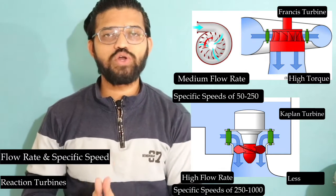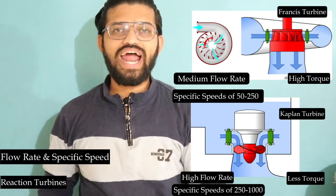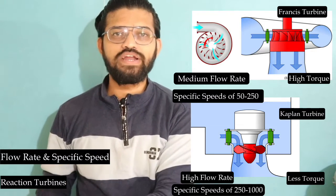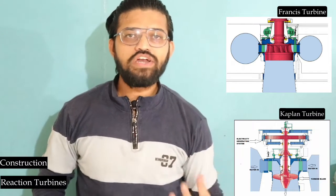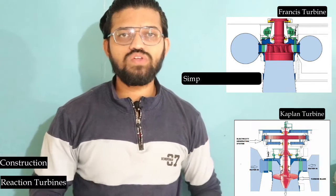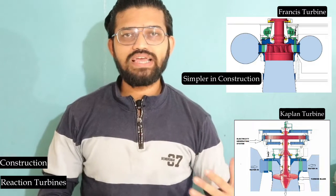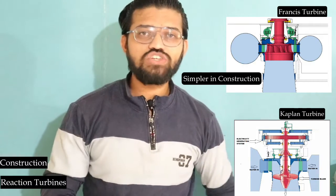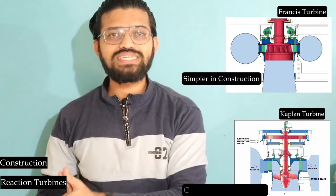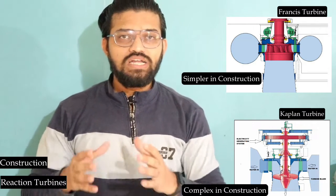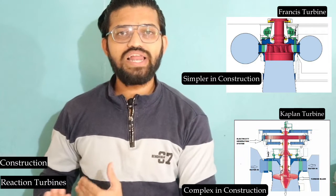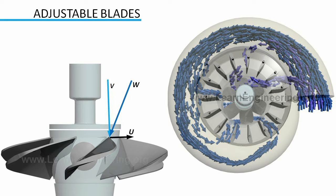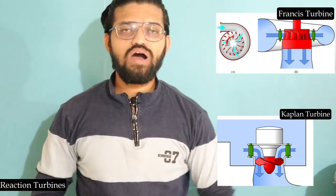The torque generated is more in the case of the Francis turbine than the Kaplan turbine. Looking at the internal construction of the vanes, the Francis turbine is less complex, while the Kaplan turbine is more complex because its internal vanes are movable and adjustable, which is why it has greater complexity.